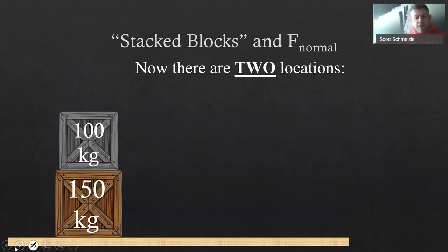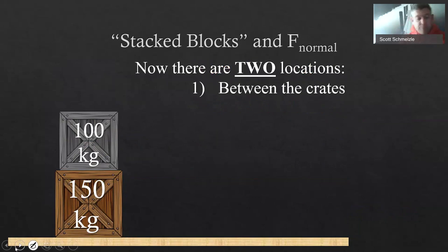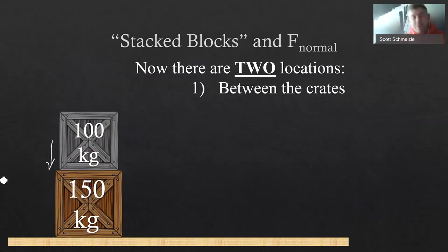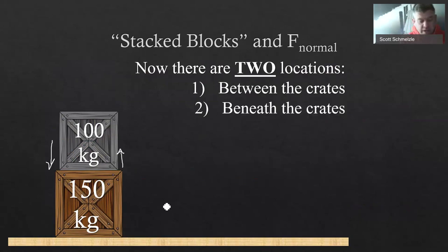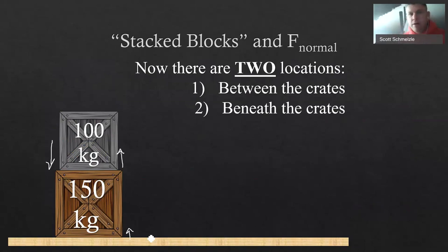When we introduce the second crate, we have two different locations. First, between the crates — the 100-kilogram crate is pushing down on the 150. If the normal force is strong enough, it could break the lower crate. So there's a normal force pushing upward between them. Only the 100 is pushing down there, giving a normal force of 980 Newtons. The second location is beneath both crates. There's a reason shelves are rated — a 500-pound limit shelf will fall if you put 600 pounds on it. Beneath both crates: 100 plus 150 equals 250 kilograms, so 250 times 9.8 equals 2,450 Newtons.